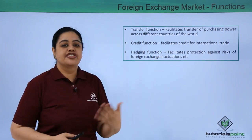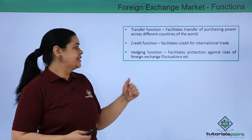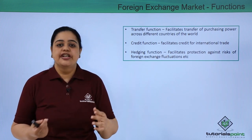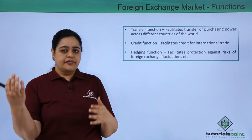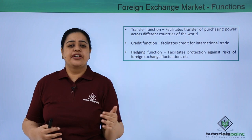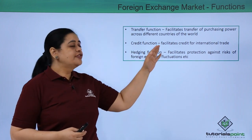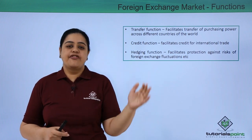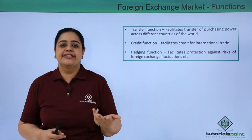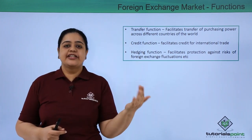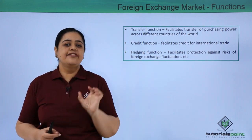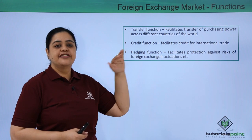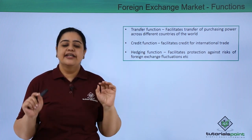The hedging function, which I explained in the previous slide, facilitates protection against the risk of foreign exchange fluctuation. When two companies are entering into a trade, they can protect themselves through the foreign exchange market so that they receive what they have anticipated. For example, if I am expecting to receive two dollars, I would receive that exact amount because of the hedging function which the foreign exchange market performs.